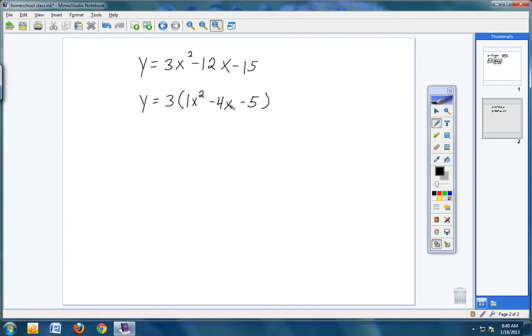Now you're left over with a trinomial that has a lead coefficient of 1. That's the easy kind. So if I listed out all the factors of negative 5, the ones that I would end up needing would be these two numbers right here. If you multiply those two numbers, do you not get a negative 5? Sure you do. And if you combine those two numbers, do you not get a negative 4? Well, sure you do.